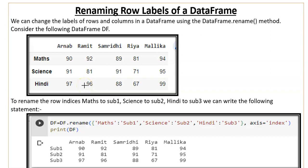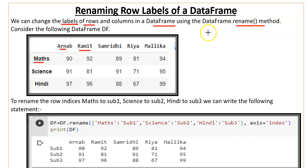Hello everyone. In this video you will learn how we can rename row labels and column labels of a DataFrame — how you can change them and give them a different name. We can change the labels of rows, which means the names you have given to different rows, also called index names. The default index is 0, 1, 2, 3. We call them labels. Using the DataFrame.rename method, we can change both row labels and column labels.